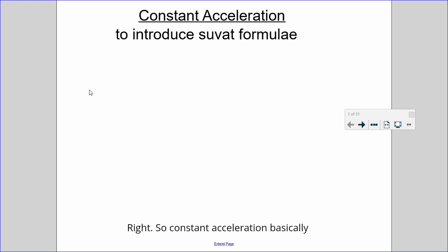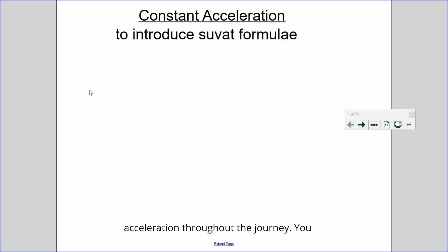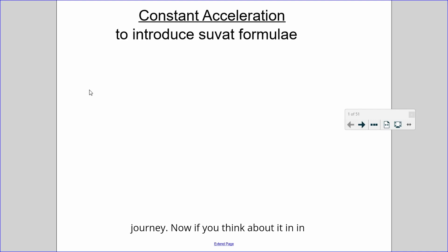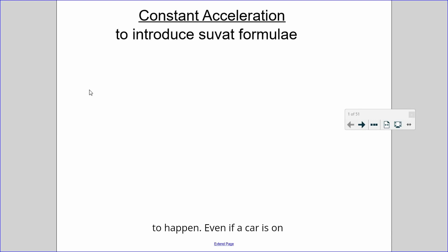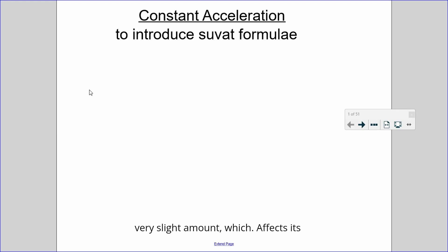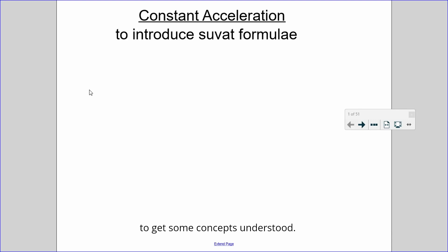Constant acceleration basically means you're traveling at the same acceleration throughout the journey — let's assume an acceleration of three for the whole journey. In real life that's pretty much never going to happen; even a car on auto-drive at the same speed is still moving very slightly, which affects its acceleration. So constant acceleration is a model we use on paper to get concepts understood, and then we go to real-life situations where acceleration is varying and changing.